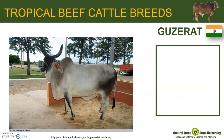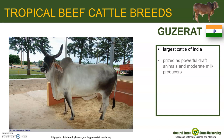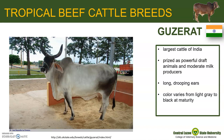We start with the tropical breeds. Guzerat are among the largest cattle of India and are prized as a powerful draft animal and are moderate milk producers. Guzerat cattle have a short broad face with long ears drooping and open to the front. Color varies from light gray to black at maturity. Guzerat cattle are maintained as a pure breed in India and Brazil.